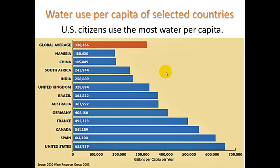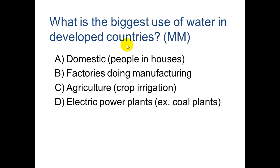In the U.S., we use the most water per capita of any country — about double the global average of water use. What is the biggest use of water in developed countries like the U.S.? The correct answer is D: electric power plants, specifically for cooling coal plants.